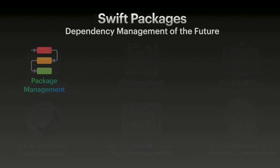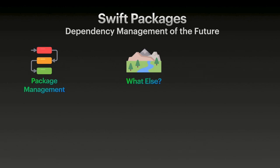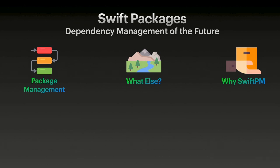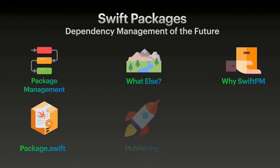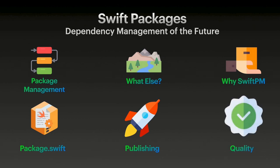To recap today: we talked about what package management is — versioning, modularization, and related concepts. We looked at what else has been out there for iOS and Swift developers: CocoaPods, Carthage, and Git Submodules. We talked about why Swift Package Manager is so great — developing without extra tools and the versatility of Swift. We covered the structure of a package.swift file, how to publish a Swift package so it's available and easy for people to find, and how to maintain good code quality through unit testing, source documentation, and tools like Commodore and Rocket.